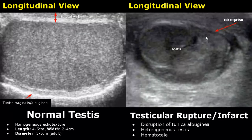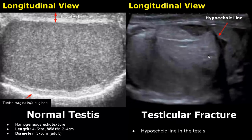In testicular ruptures and infarcts there is disruption of the tunica albuginea. The testis appears heterogeneous and a hematocele can also be seen. Testicular fracture is due to trauma — there will be a hypoechoic line passing through the testis, where a portion of the testis has been separated. This hypoechoic line represents blood.